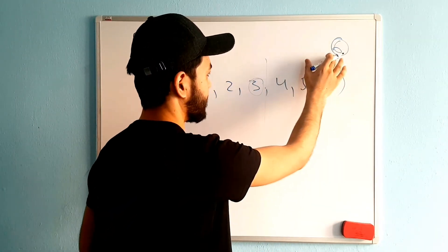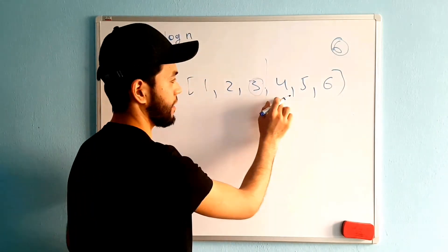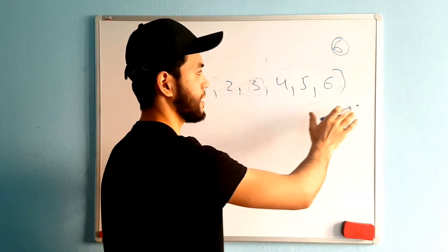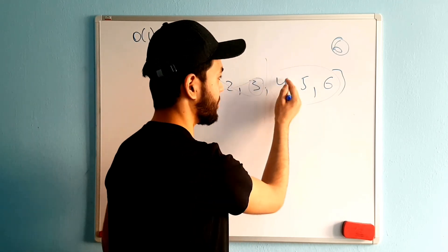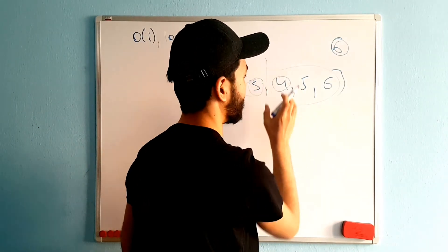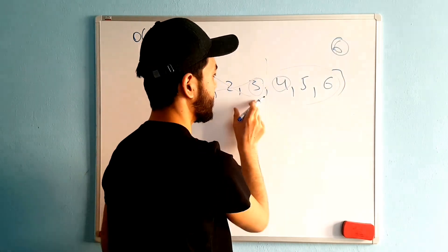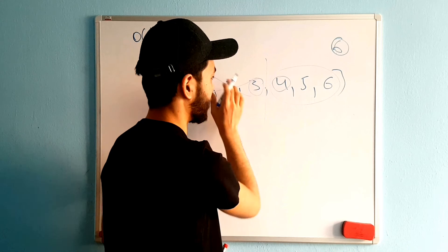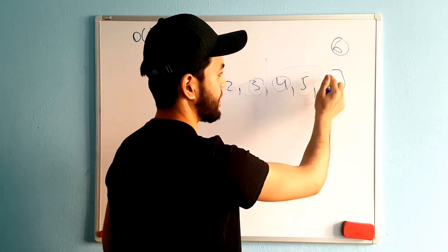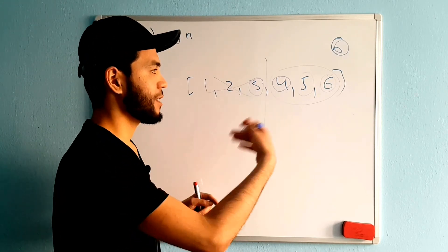In binary search, if the target value is greater than the middle value, I go to the right side and ignore the left side entirely. Even if I have a million numbers, I'm just finding the middle each time. For example, with middle value 3, since 6 is greater, I go right. Then I take the next middle — say 5 — compare again, and find the target. This is much faster than iterating the entire list.